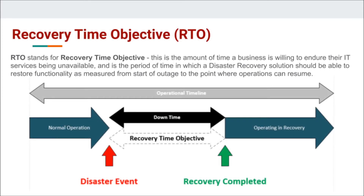First, we'll take a look at the RTO, that's the Recovery Time Objective. This is the amount of time a business is willing to endure their IT services being unavailable, and is the period of time in which a disaster recovery solution should be able to restore functionality, as measured from start of outage to the point where operations can resume. We can see this idea demonstrated on the chart below. We'll be going along on normal operations, our website will be running, then some disaster event happens — let's say an earthquake or a fire takes our website offline. We'll have a period of downtime while we're executing our recovery, and then we'll resume operations. The Recovery Time Objective is the amount of downtime we want to allow, and we want to make sure our recovery solution can recover within it.